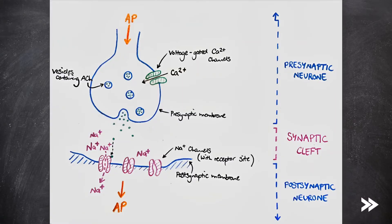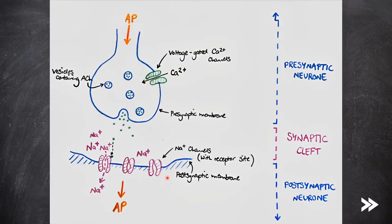Here we have a diagram of a synapse. We have the pre-synaptic neuron, where the action potential arrives, we have voltage-gated calcium ion channels, as well as vesicles containing acetylcholine. The pre-synaptic neuron is surrounded by the pre-synaptic membrane, then we have the synaptic cleft — the space in between the pre- and post-synaptic neurons — and the post-synaptic neuron, surrounded by the post-synaptic membrane, which contains sodium ion channels that have receptors where acetylcholine can bind.